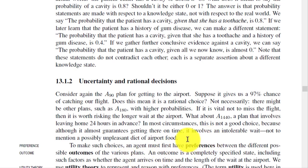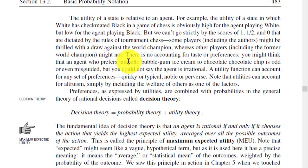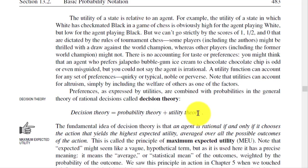We use utility theory to represent and reason about preferences. The utility of a state is relative to an agent. For example, the utility of a state in which white has checkmated black in a game of chess is obviously high for the agent playing white but low for the agent playing black.